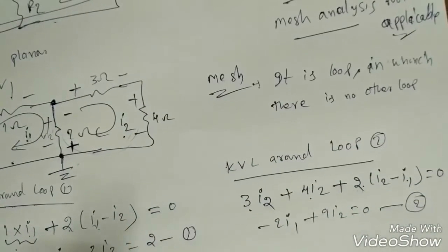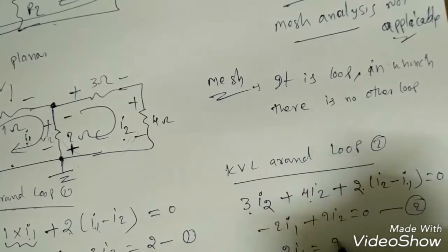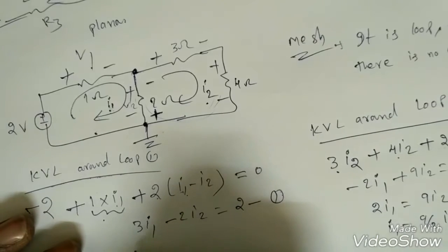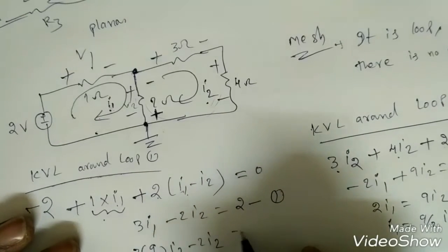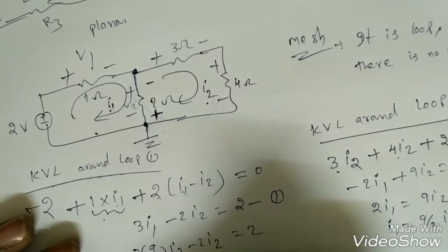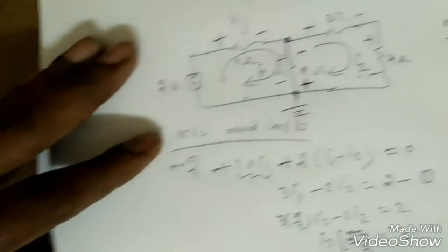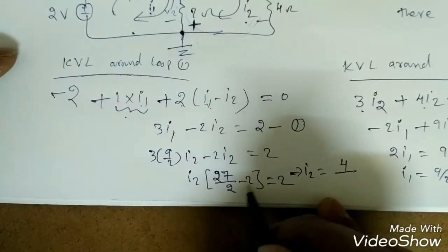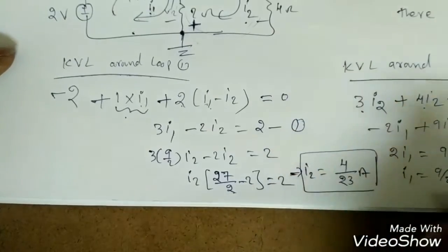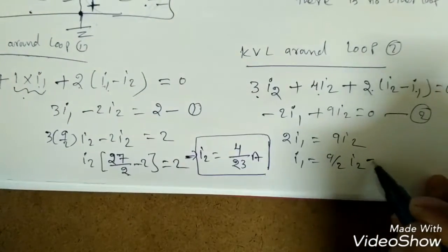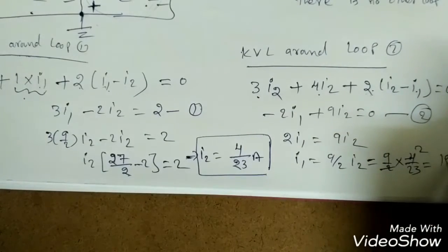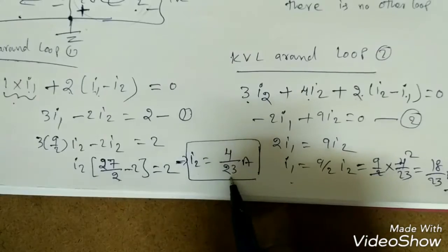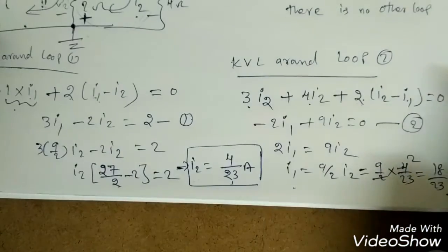From equation 2: 2I1 = 9I2, so I1 = (9/2)I2. Substituting into equation 1: 3 times (9/2)I2 minus 2I2 = 2, which gives (27/2 - 2)I2 = 2, so (23/2)I2 = 2, giving I2 = 4/23 amperes. Then I1 = (9/2) times (4/23) = 18/23 amperes. So mesh current I1 = 18/23 A and I2 = 4/23 A.